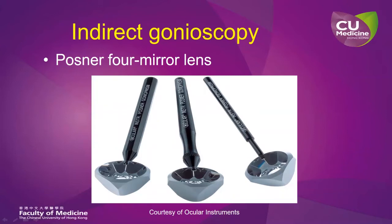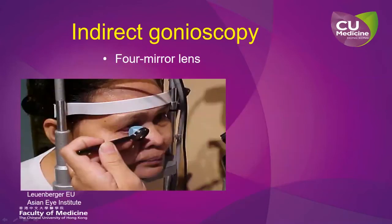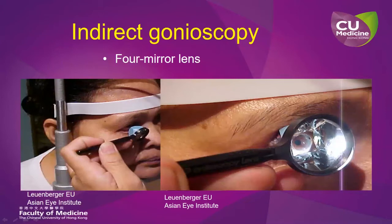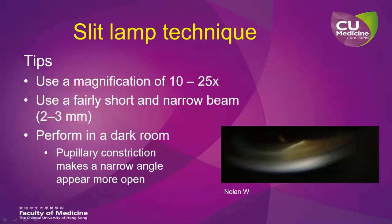Another option for indirect gonioscopy is the Posner 4-mirror lens. This can be placed on the patient's eye at the slit lamp, with the patient first looking upward, then the lens rotates towards the eye, the patient looks straight towards the lens, and contact takes place. At the slit lamp, when using an indirect gonioscope, we need a magnification of about 10 to 25 times. We have to use a very short and narrow beam of light to make sure there is no slit lamp lighting going directly through the pupil, which can induce pupillary constriction. Furthermore, this has to be performed in a completely darkened room to avoid pupil constriction due to light.